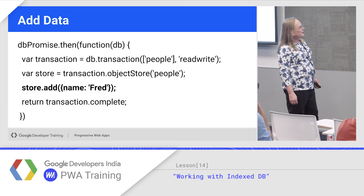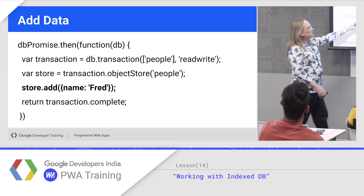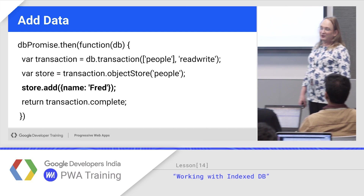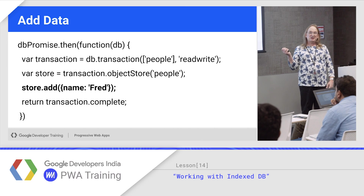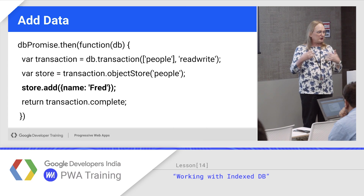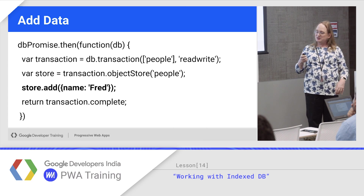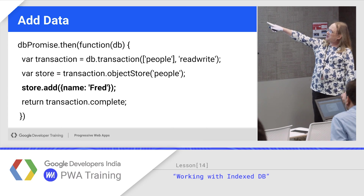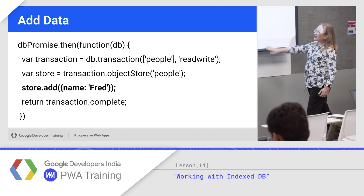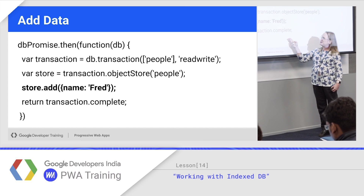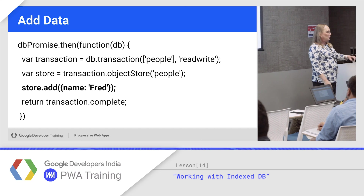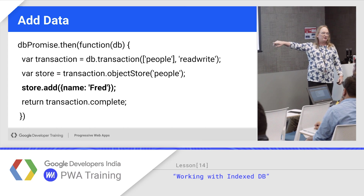Open the database, open the transaction, and tell the transaction which object stores it's going to operate on so it can do appropriate locking across all of them. Because it's a non-relational database, you don't have automatic connections between stores, so you have to do that yourself. Open the object store, do an action like store.add, and then return transaction.complete. In IDB Promised, this returns a promise that resolves when the transaction is done. In native IndexedDB code, you'd be listening for events — success or fail.